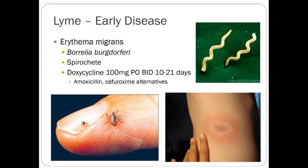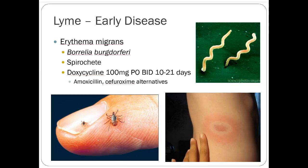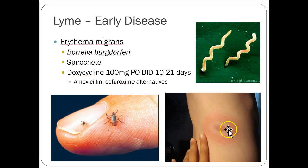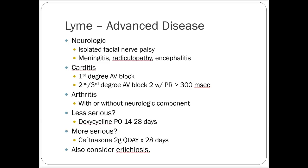Early Lyme disease presents with erythema migrans — a target-like rash that's the hallmark, appearing where the deer tick bit. Sometimes you can get a tick bite and not notice it at all, and there could still be Lyme disease even without erythema migrans. If Lyme isn't treated initially, you can end up with complications that sound similar to syphilis: neurologic, cardiovascular, and arthritis components.